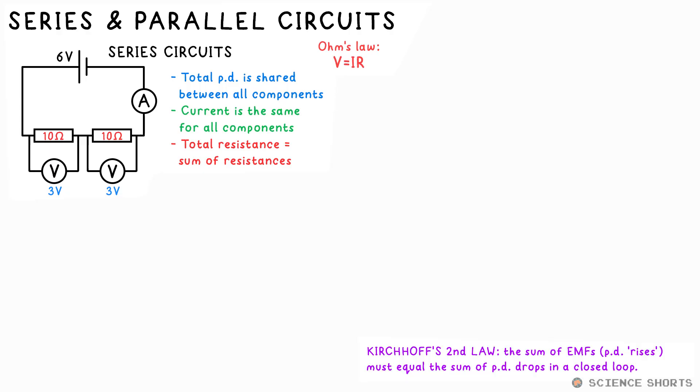This idea is actually just Kirchhoff or Kirchhoff's second law. The sum of EMFs must equal the sum of PD drops in a closed loop. Just remember that if batteries are pointing in opposite directions, one of them must be a minus EMF. By the way, we can also call this setup a potential divider circuit as the total potential, total PD, is being shared.